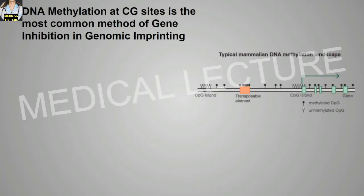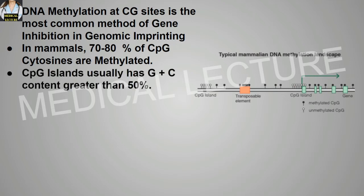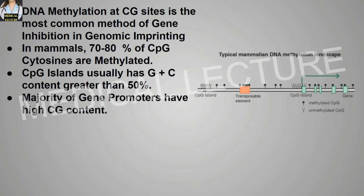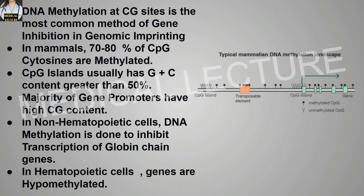DNA methylation at the CpG sites is the most common method of gene inhibition in genomic imprinting. 70 to 80 percent of the CpG cytosines are methylated. CpG islands usually have a G+C content greater than 50 percent, and the majority of gene promoters have high CG content. In non-hematopoietic cells, DNA methylation is done to inhibit the transcription of the globin genes. In hematopoietic cells, genes are hypomethylated.